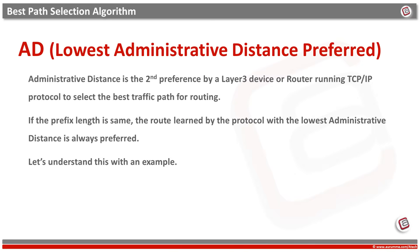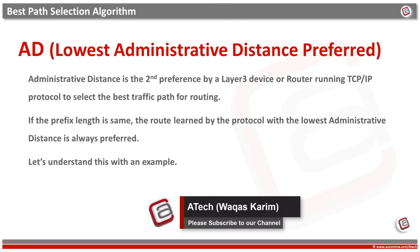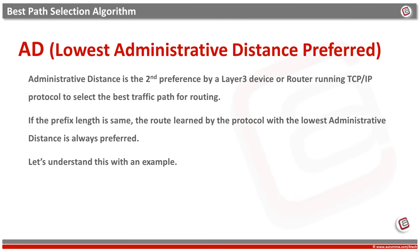Admin distance is the second choice. Admin distance is a feature used by routers to select the best path when there are two or more different routes to the same destination learned from different routing protocols. Admin distance defines the reliability of a routing protocol. Each routing protocol is prioritized from most to least reliable using the admin distance value. Admin distance is a numeric value that specifies the preference of a particular route. If a router receives routes from multiple sources and the prefix length of all of them is the same, the route learned by the protocol with the lowest admin distance is always preferred.